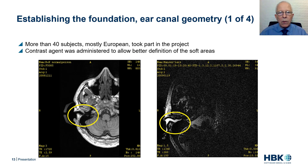Both females (40%) and males (60%) were scanned, and the average age of those that participated was 39 years. The scans showing the entire ear canal of one of the persons that participated are shown on the slide. The scan to the left is without contrast agent and the scan to the right is with contrast agent. A part of the concha is also clearly visible in the scan.